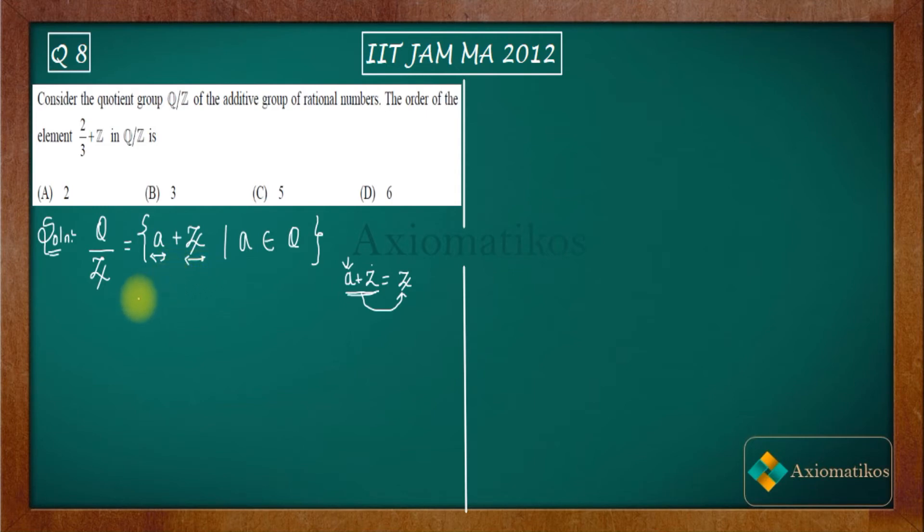So now what element do you have? You have this element a = 2/3 + Z. See, this 2/3 is not an integer, therefore you cannot write this as Z. Z is the identity.